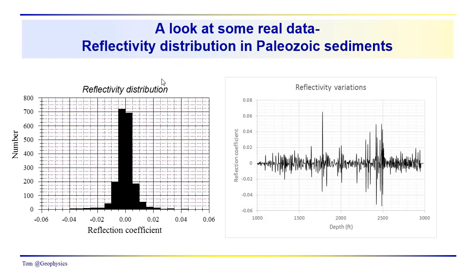Let's take a look at some real data now. This data comes from some Paleozoic sedimentary rocks, and you can see a nice bell-shaped, Gaussian-looking distribution of reflectivity. You can also see that these reflection coefficients are very small, which is good for us because the reflection coefficients control the two-way transmission loss. If these reflection coefficients were always very large, we'd have trouble seeing anything — we'd have trouble getting energy back to the surface.